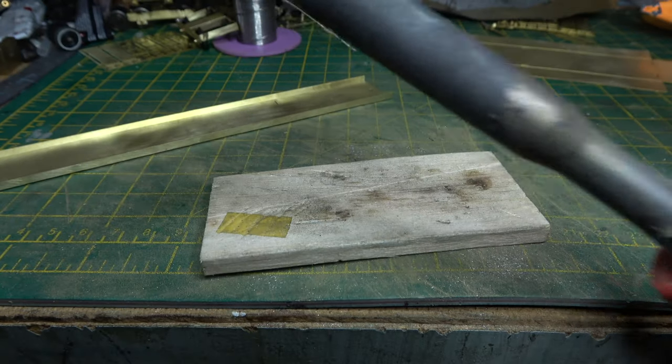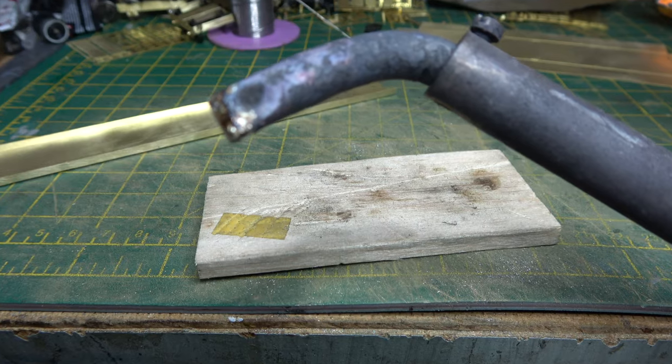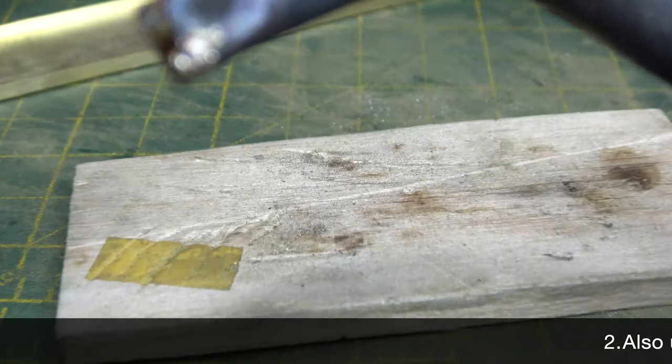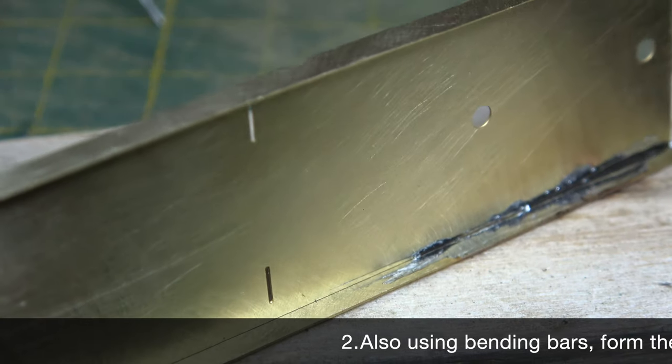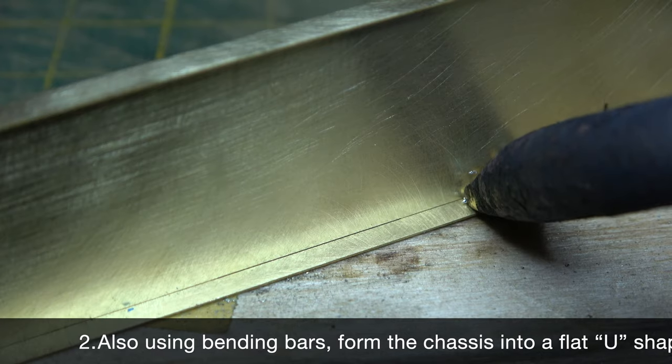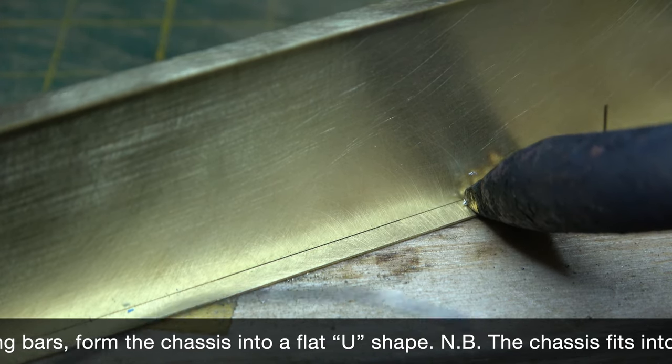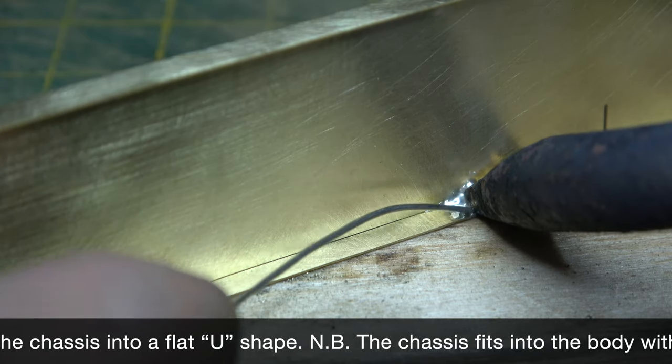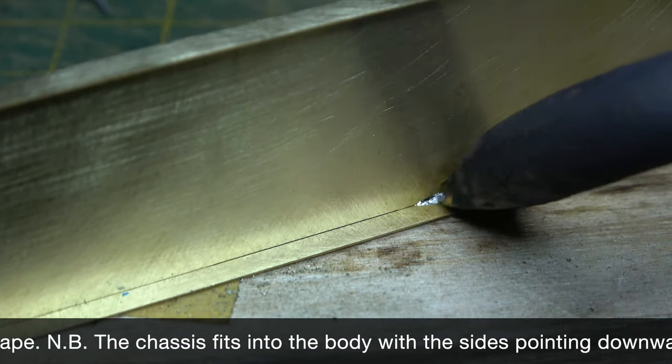Then because I needed a lot of heat, I had to break out Big Bertha, insert 70s humor, which is my Weller 75 watt soldering iron, because my normal Antex 18 just wouldn't get hot enough to even melt the solder on this job.